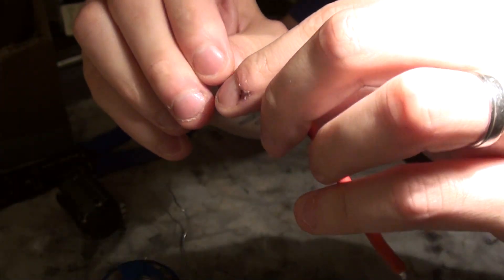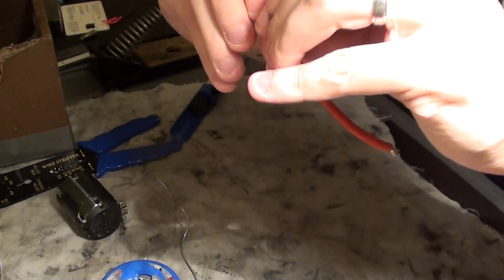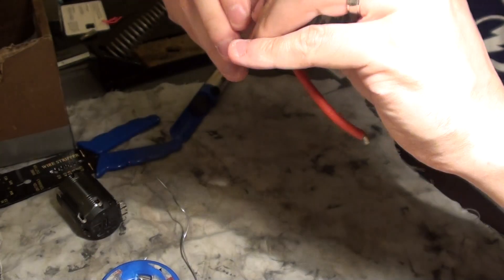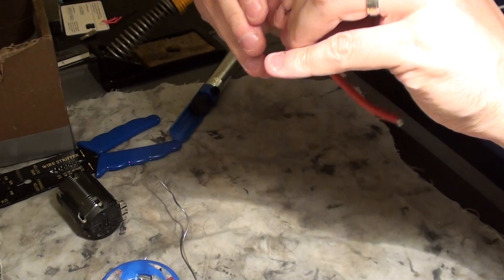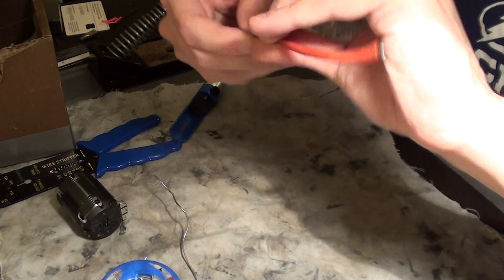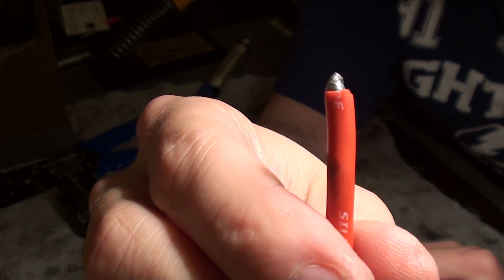What you want to do is you want to take them and you want to twist them around like this. I'll show you in a second how they look. You want to twist them so they're not just all in a straight line. See there you go. So they're all twisted in.